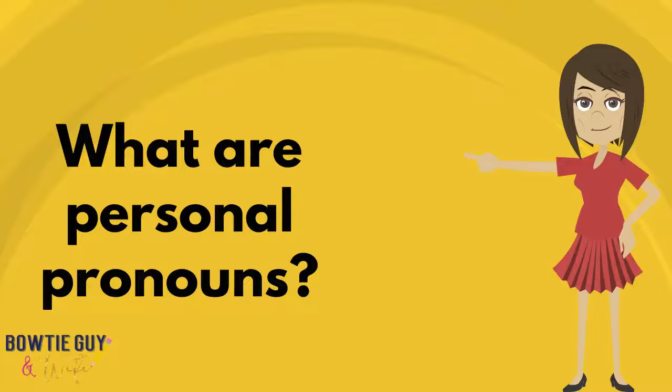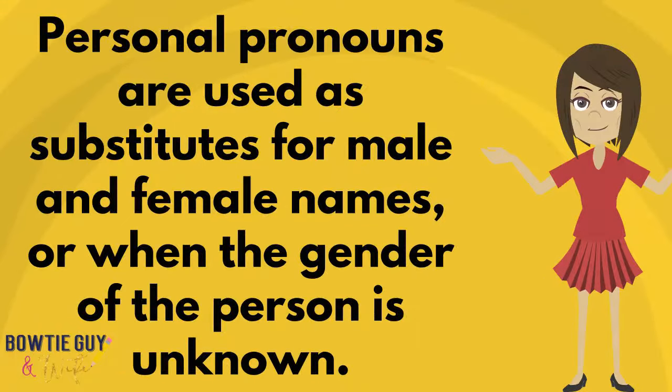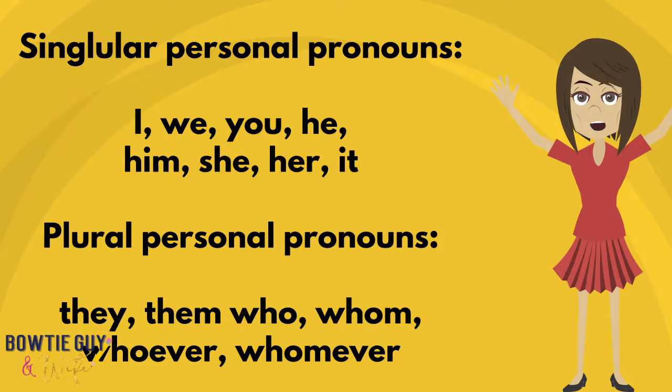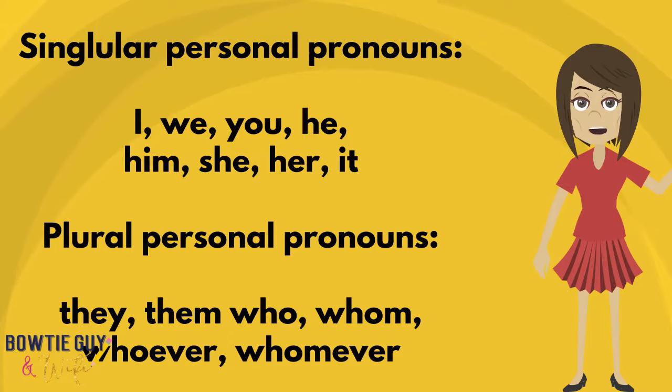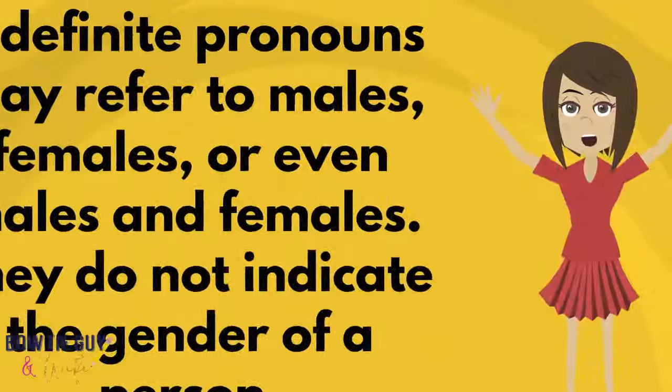What are personal pronouns? Personal pronouns are used as substitutes for male and female names, or when the gender of the person is unknown. Singular personal pronouns are words like I, we, you, he, him, she, her, and it. Plural personal pronouns are words like they, them, who, whom, whoever, and whomever. Indefinite pronouns may refer to males, females, or even males and females.